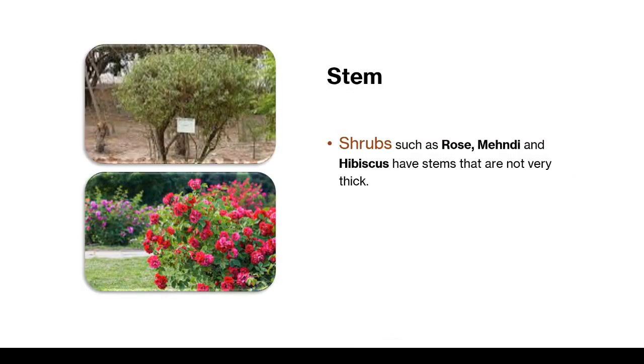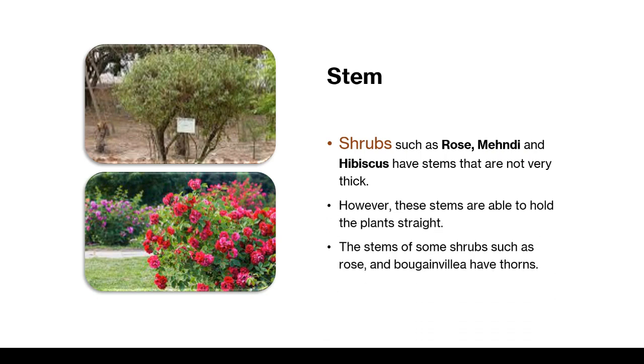Shrubs such as rose, mehendi and hibiscus have stems that are not very thick. However, these stems are able to hold the plants straight. The stems of some shrubs such as rose and bougainvillea have thorns.